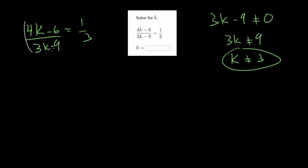So to do that, put these in parentheses, and we'll multiply each side by 3k minus 9, and on the left-hand side, they're going to cancel out the 3k minus 9, and the top and the bottom will cancel, and we just get 4k minus 6.